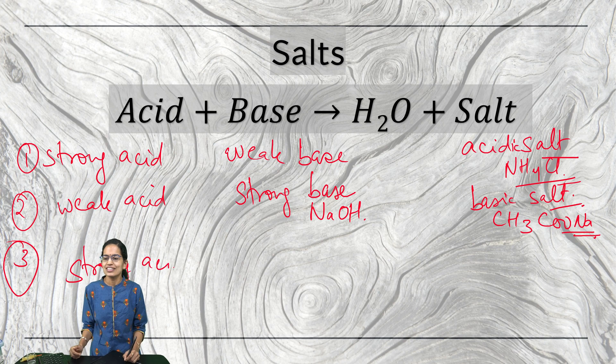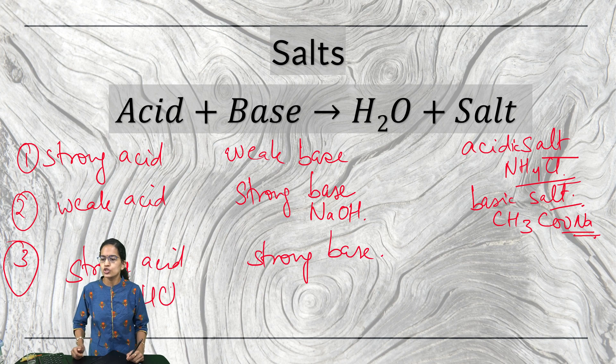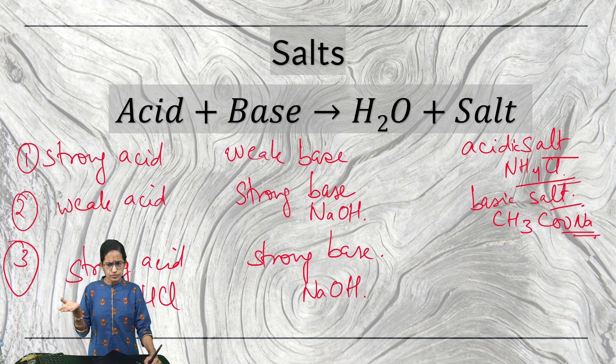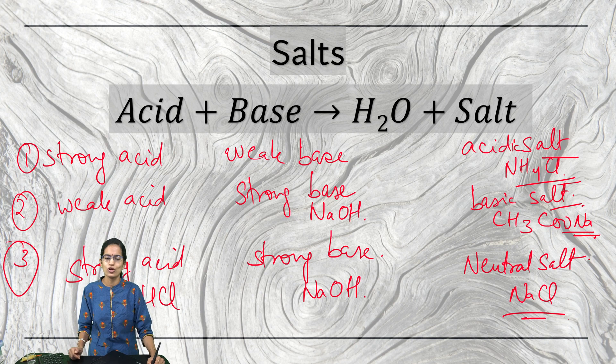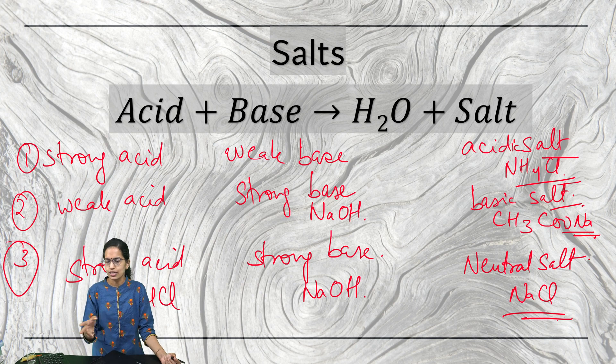The next important case is when a strong acid reacts with strong base. Strong acid we know is HCl. Strong base is NaOH, sodium hydroxide. Hydrogen chloride reacting with sodium hydroxide to form a neutral salt. When both of them are strong, neutral salt would be formed. And what is a neutral salt? The common salt that we consume. So NaCl would be an example here in this reaction.